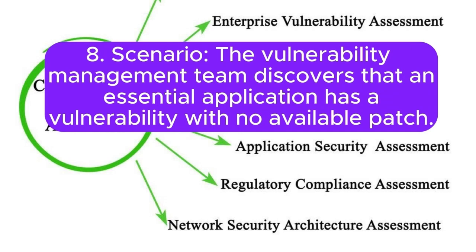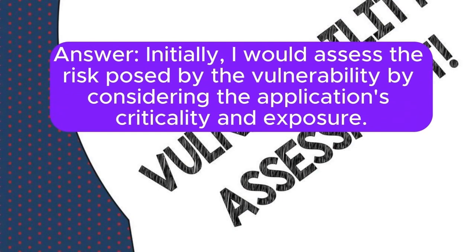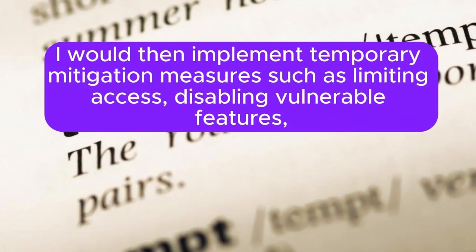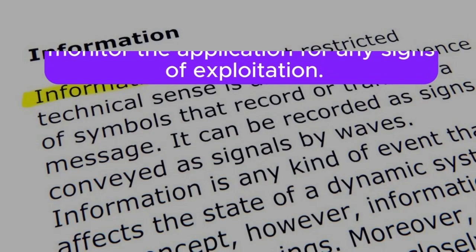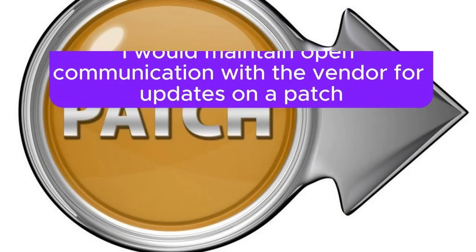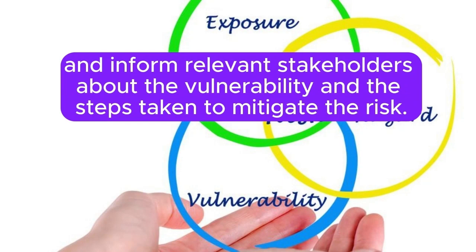Scenario 8: The vulnerability management team discovers that an essential application has a vulnerability with no available patch. What is your approach? Initially, I would assess the risk posed by the vulnerability by considering the application's criticality and exposure. I would then implement temporary mitigation measures such as limiting access, disabling vulnerable features, or using a web application firewall to block exploit attempts. Additionally, I would continuously monitor the application for any signs of exploitation, maintain open communication with the vendor for updates on a patch, and inform relevant stakeholders about the vulnerability and the steps taken to mitigate the risk.